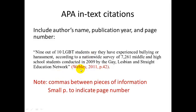Here's the same quotation — 9 out of 10 LGBT students, etc. — but the citation looks very different. Parenthesis, Webley, comma, 2001 (that's the year), comma, and then p. 42, end parentheses. And just like with MLA, my period is on the outside of the parenthetical in-text citation. A couple things to note: in APA, there are commas between these different pieces of information inside the parentheses. And unlike MLA, they include a lowercase 'p.' to indicate the page number and differentiate it from the year.